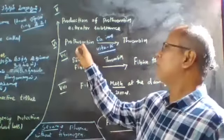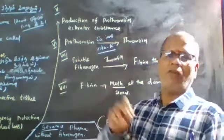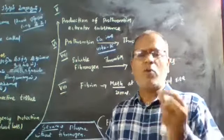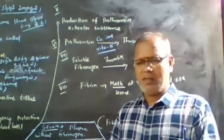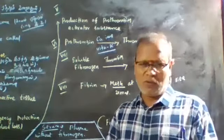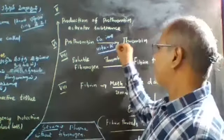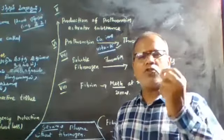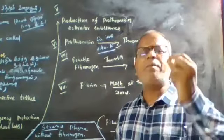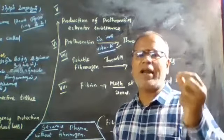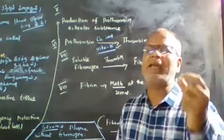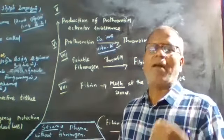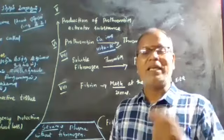Prothrombin is converted to thrombin. Prothrombin is a plasma protein produced in the liver. For the production of prothrombin, the system needs Vitamin K. Prothrombin is then activated to form thrombin.